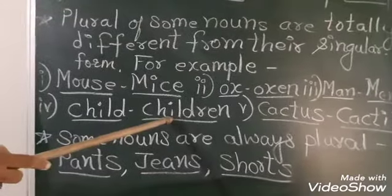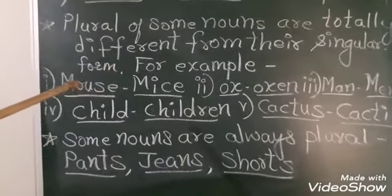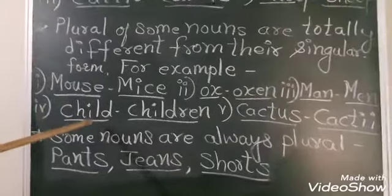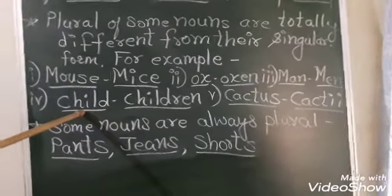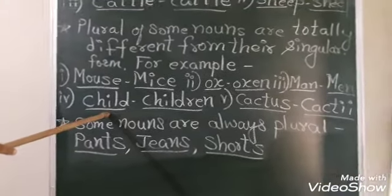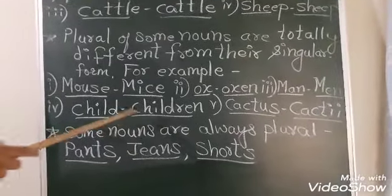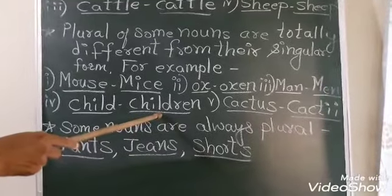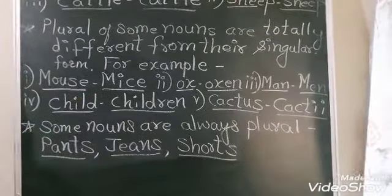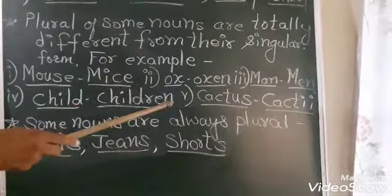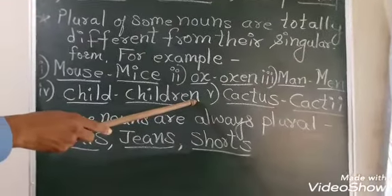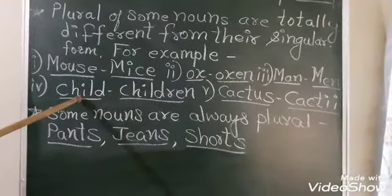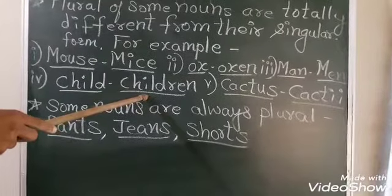Child-children. Most of the students make lots of mistakes in this. Singular form is child, C-H-I-L-D. Plural is children, C-H-I-L-D-R-E-N. Many students add an 's' after children. That is wrong. The plural form of child is children.